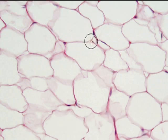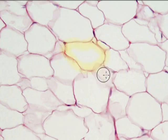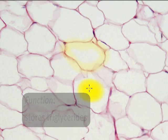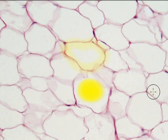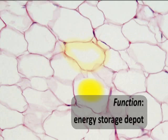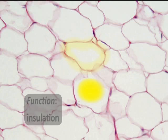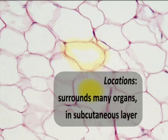Our next loose connective tissue is adipose tissue, made up of these bubble-like adipocytes — the fat cells — which store triglyceride fat within their interior. They can swell to large sizes to accommodate increasing amounts of lipid, and they act as a major energy storage depot that can build up fat supplies but also release them to the body as needed.